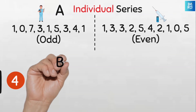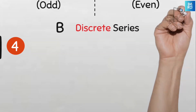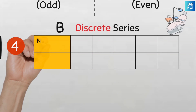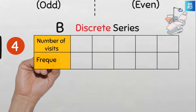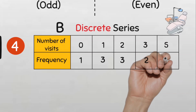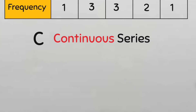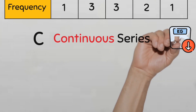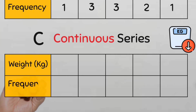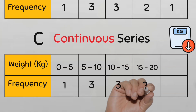The third data set is a discrete series data set on the number of dental clinic visits of a sample of 10 children in the last one year. This is discrete series data because we can see the variable and each value of the variable has its corresponding frequency. The last data set is a continuous series data on the weight in kilograms of a sample of 10 children attending the nutritional clinic in Nigeria. This is a continuous series data set as we can see that the data is grouped with the frequencies given for each of the classes.